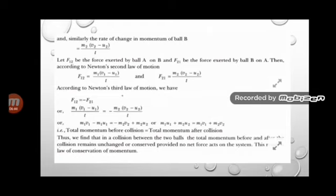According to Newton's third law, both forces are equal and opposite: F12 = −F21. Substituting both formulas and cancelling T from both sides, we get M1V1 − M1U1 = −M2V2 + M2U2. Rearranging with initial velocities on one side and final velocities on the other: M1U1 + M2U2 = M1V1 + M2V2. This proves that total momentum before collision equals total momentum after collision.